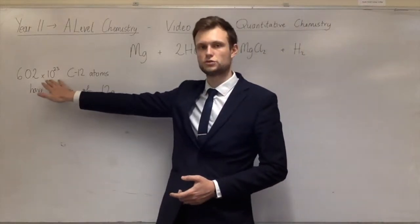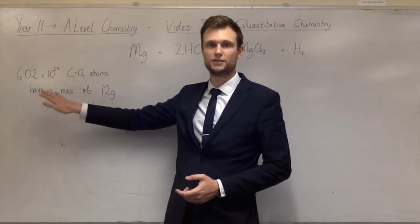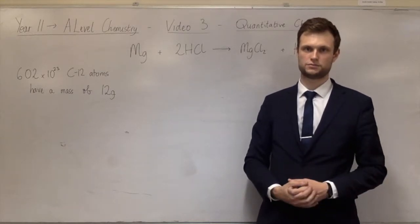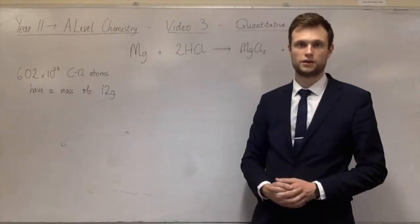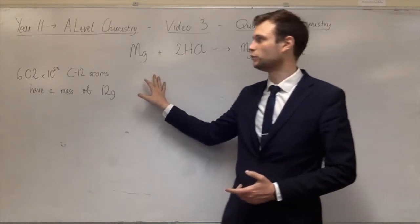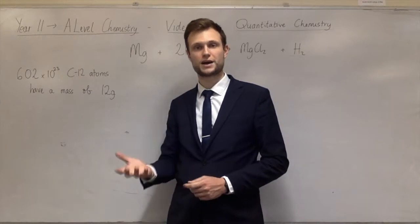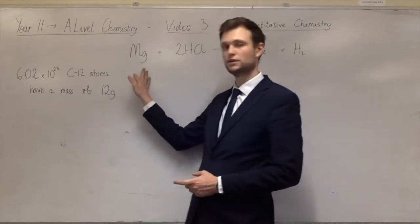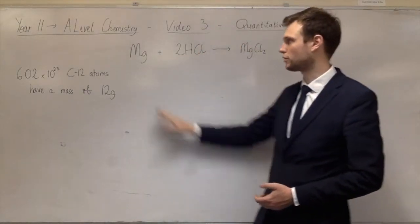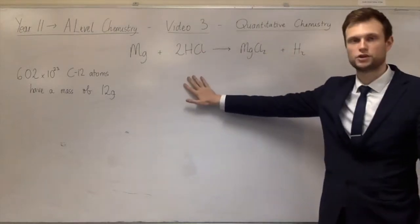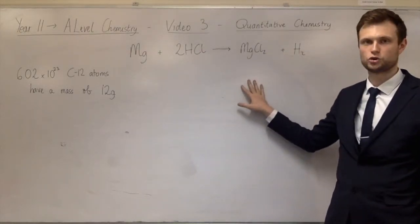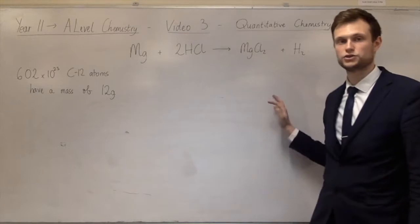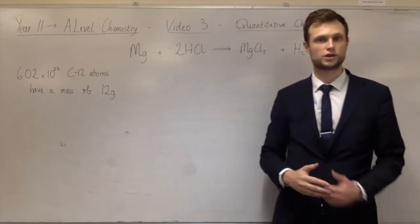Because we know the mass of 6.02 × 10²³ carbon-12 atoms is exactly 12 grams, we can work out the mass of any number of any atom just by comparing it to carbon-12. So if we know the mass of magnesium we can work out the number of moles using the mass and the relative atomic mass from the periodic table. Moles are the way we link mass to the equation — without an equation you can't do much, and without moles you can't do any calculations.